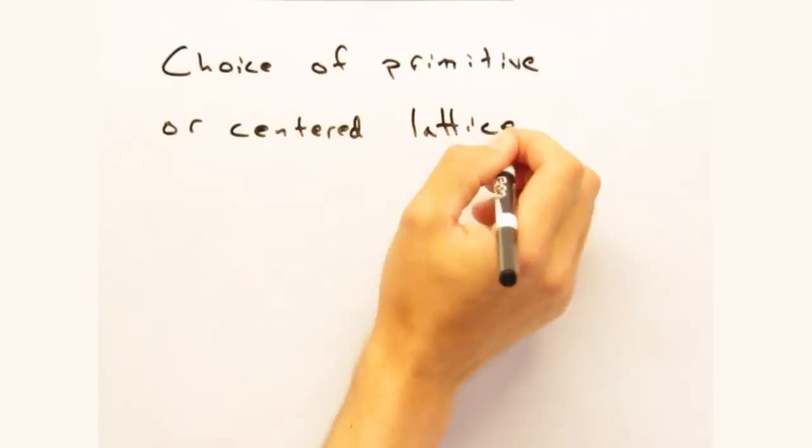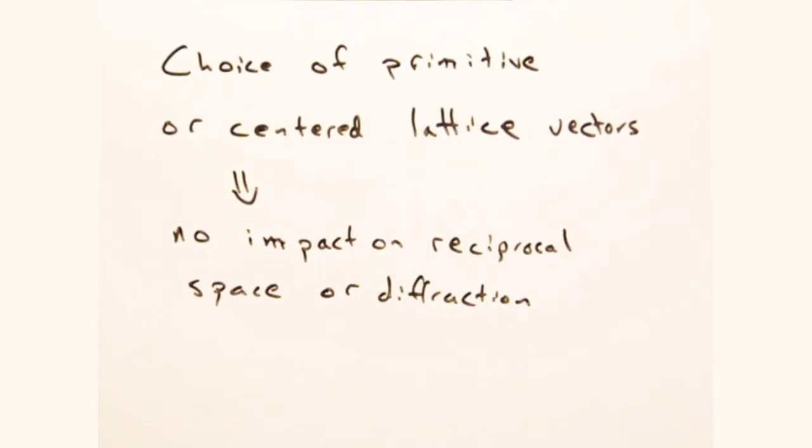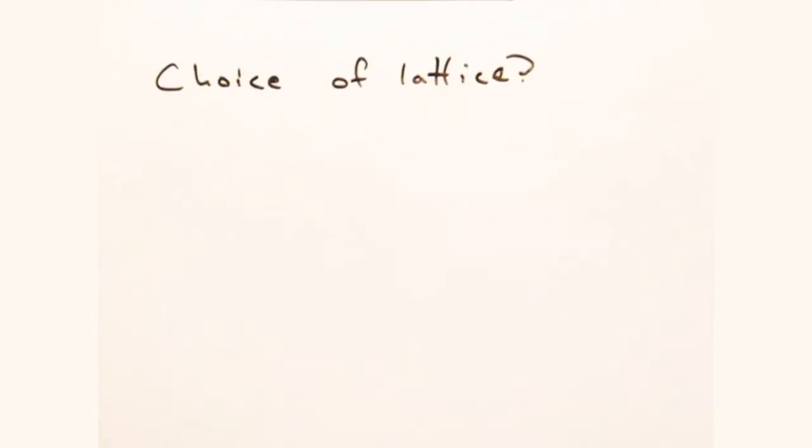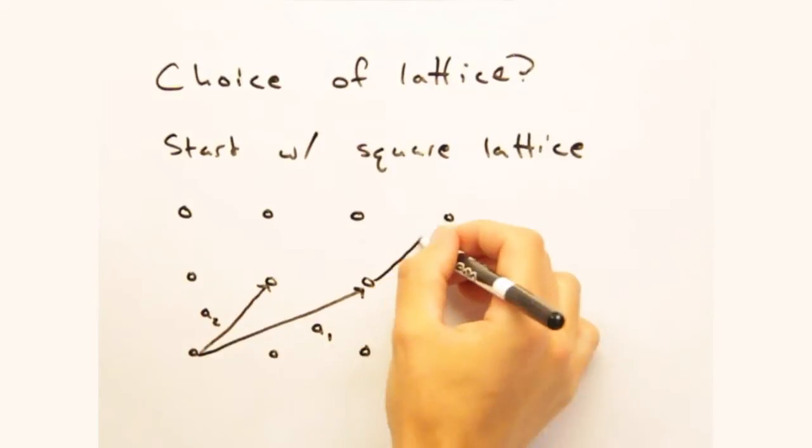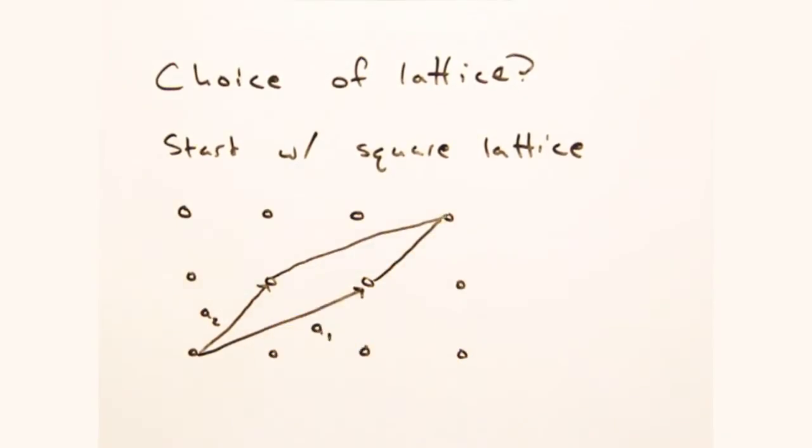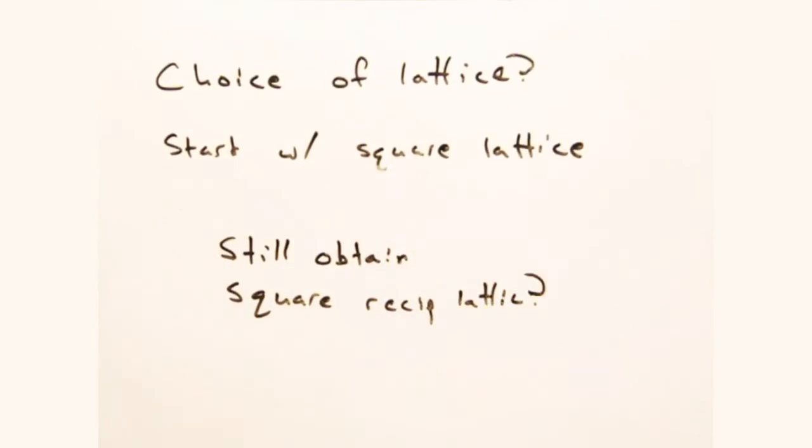So centering makes no difference when it comes to diffraction. Hmm, I wonder if this is also true for choice of lattice. If you start with a square lattice in real space but pick primitive oblique lattice vectors, does it create a square lattice in reciprocal space? Ooh, that's a good question. I'll leave it for you guys to deal with.